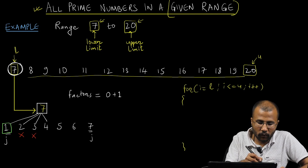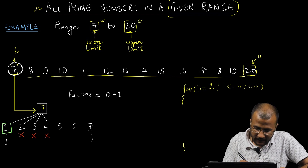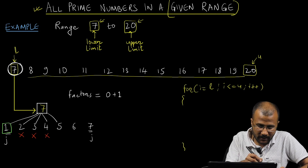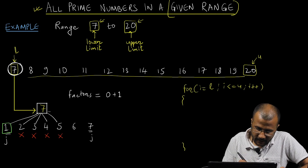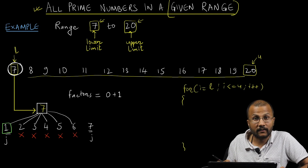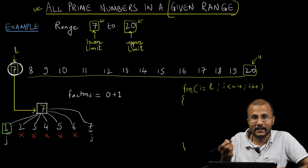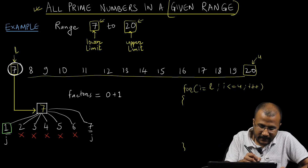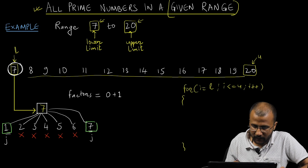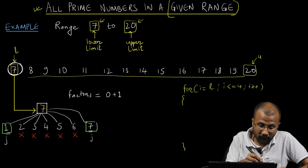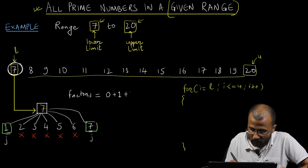Dividing 7 by 4 — not divisible, so 4 is not a factor. Dividing 7 by 5 — not divisible, so 5 is not a factor of 7. Dividing 7 by 6 — not divisible, so 6 is not a factor of 7. Now dividing 7 by 7 — it is divisible! So 7 is a factor of 7. I found one more factor, so the count becomes plus 1 — total number of factors here is 2.